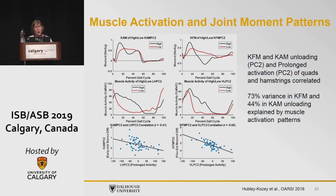This is where we want to begin to marry some of the work around EMG and prediction models for joint compressive forces. These patterns of activity explain 73% of the knee flexion moment variance and about 44% of the knee adduction moment unloading pattern variance.